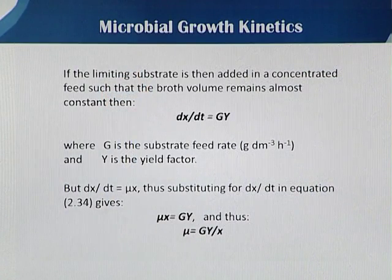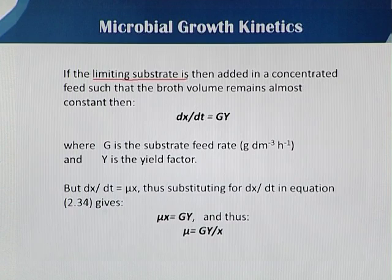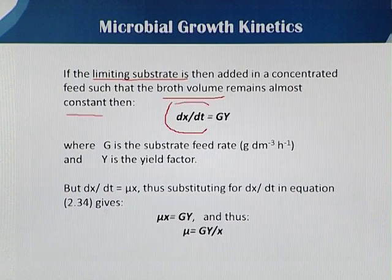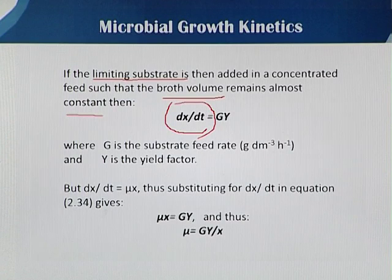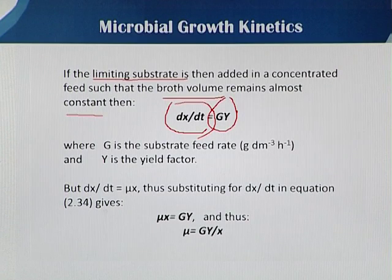If there are conditions in which you only add the limiting substrate in a concentrated feed such that the broth volume — the fermentation volume — remains constant, then we can say that dx/dt, meaning the change in biomass concentration with respect to time, is equal to g·y, where g is the substrate feeding rate and y is the yield factor.